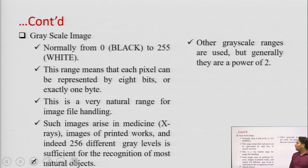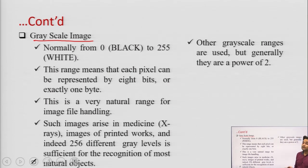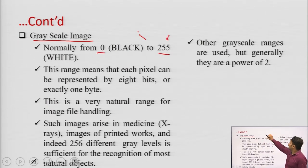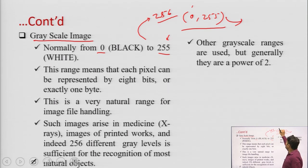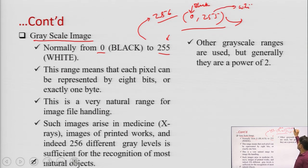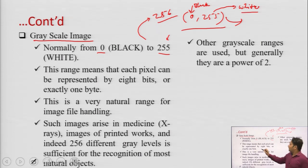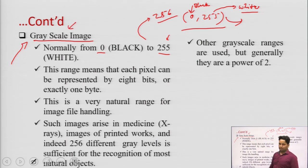The second kind of image is the grayscale image. A grayscale image varies from 0 to 255, giving 256 total levels, where 0 represents the black color and 255 represents white. Between black and white, gray color is introduced, which is why it is called a grayscale image.